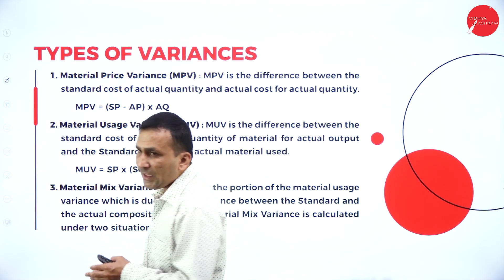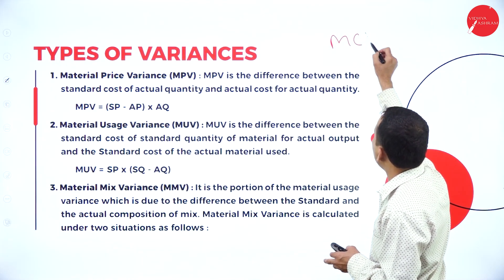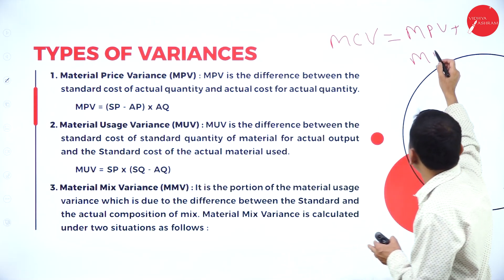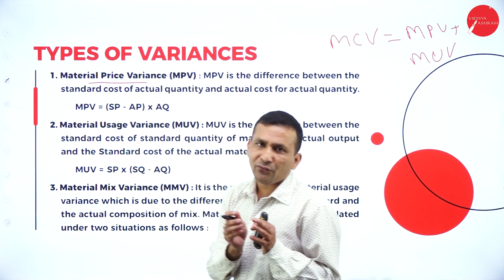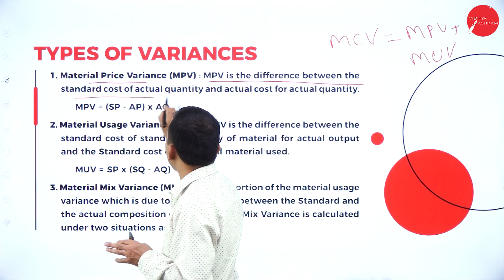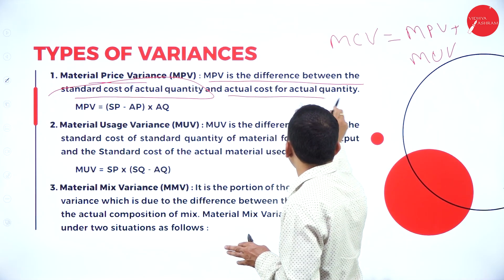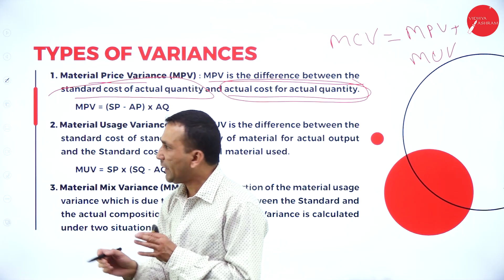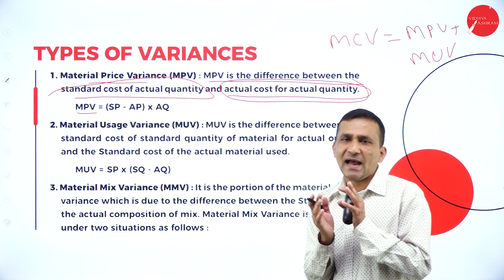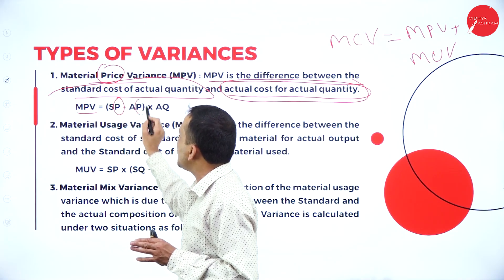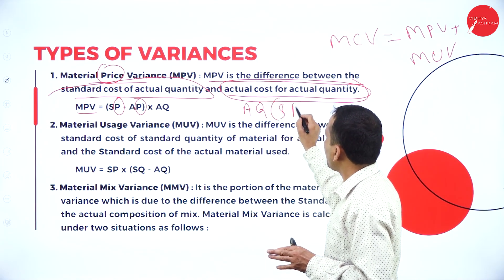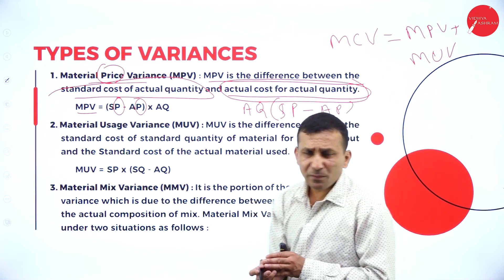Material Cost Variance equals Material Price Variance plus Material Usage Variance. The Material Price Variance (MPV) is a difference between the standard cost of actual quantity and the actual cost of actual quantity. Symbolically: MPV = (Standard Price − Actual Price) × Actual Quantity, or AQ × (SP − AP).